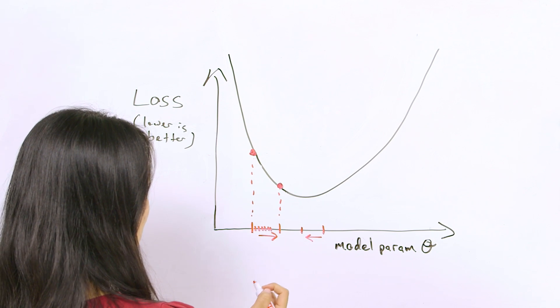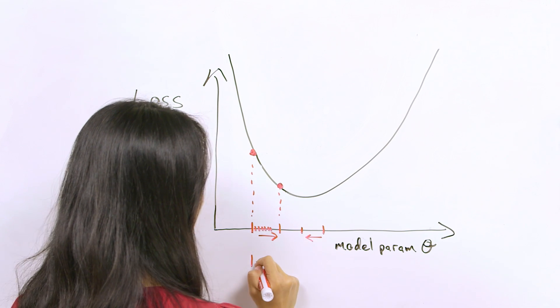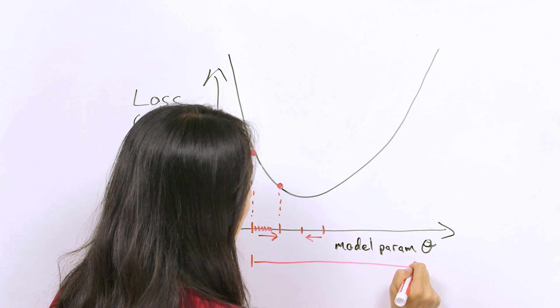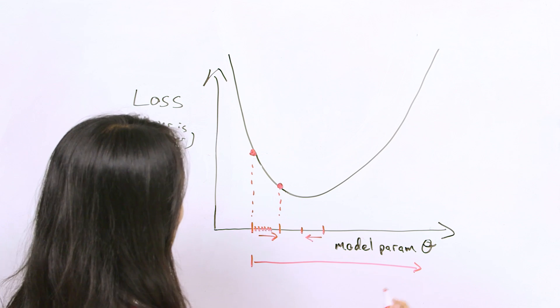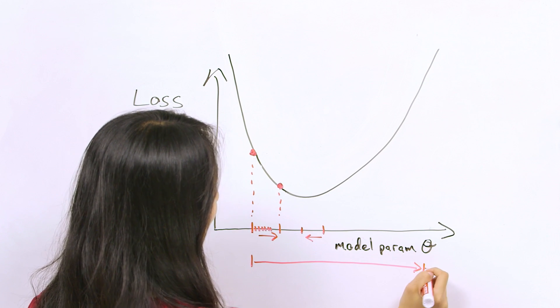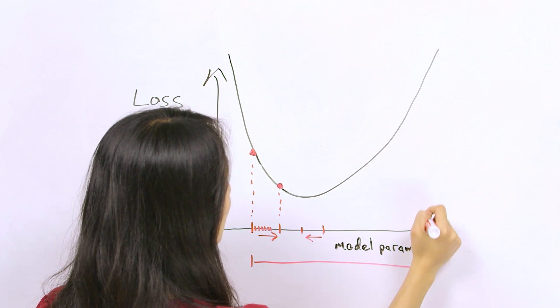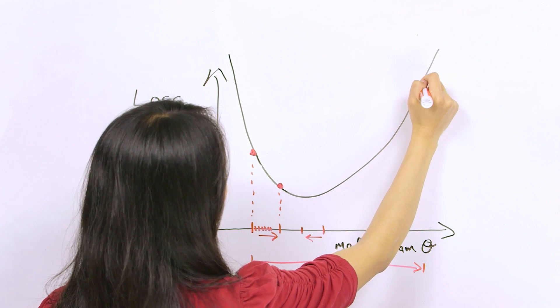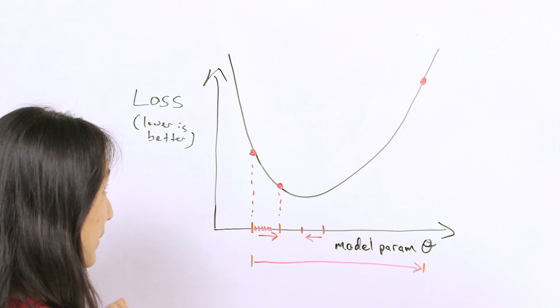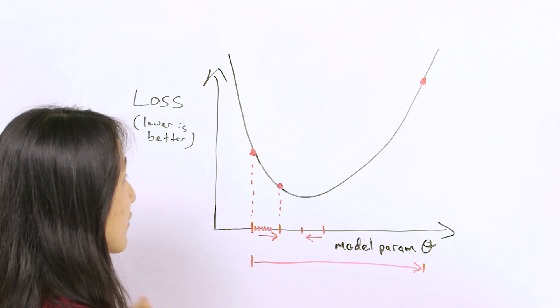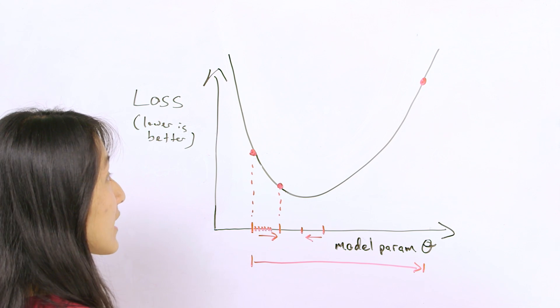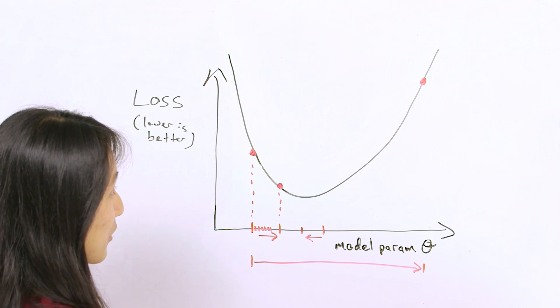However, if the learning rate is very large, then we will take a large step in the direction of negative gradient, potentially overshooting the local minimum, and even reaching a point in which the loss is even bigger than before. In more dimensions, this would cause your model to diverge, in which case you should try decreasing the learning rate by an order of magnitude or so.